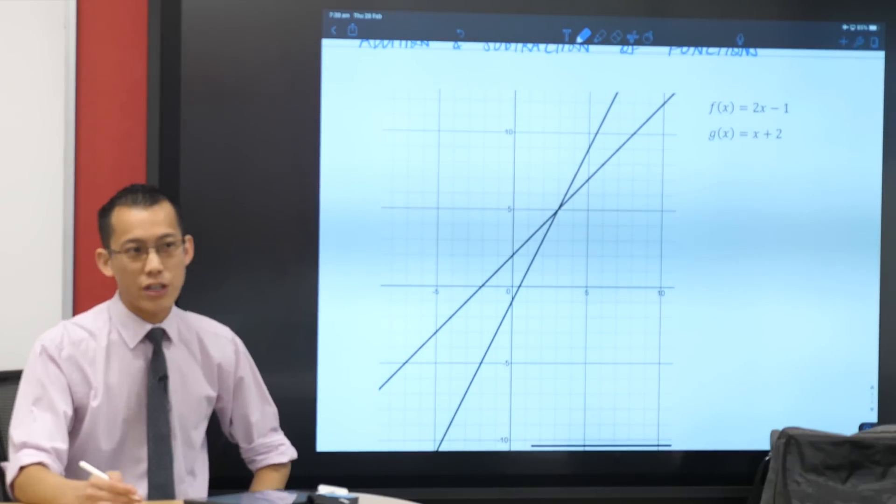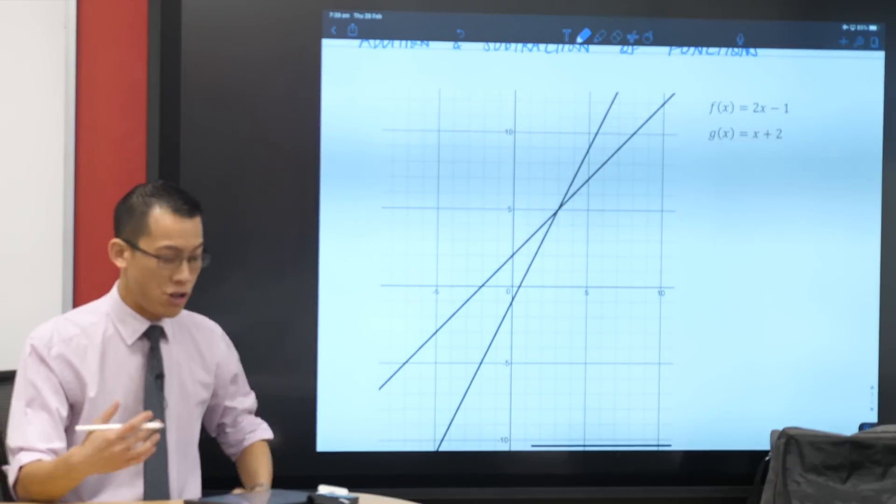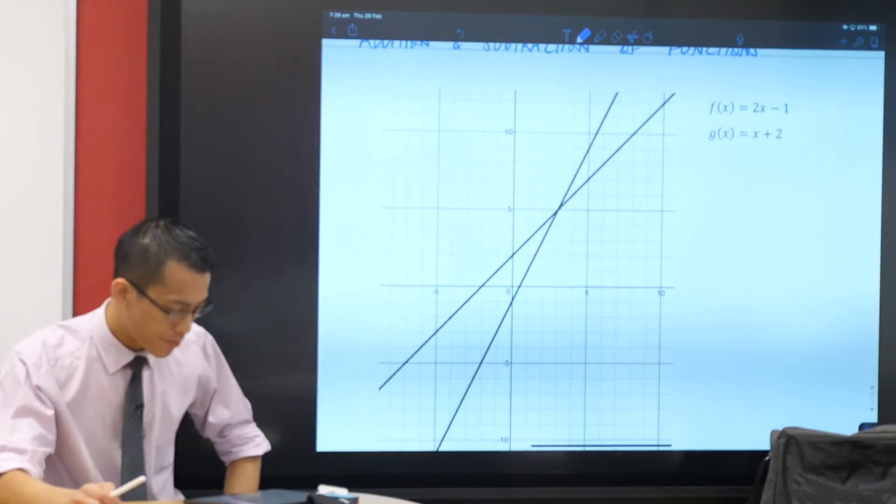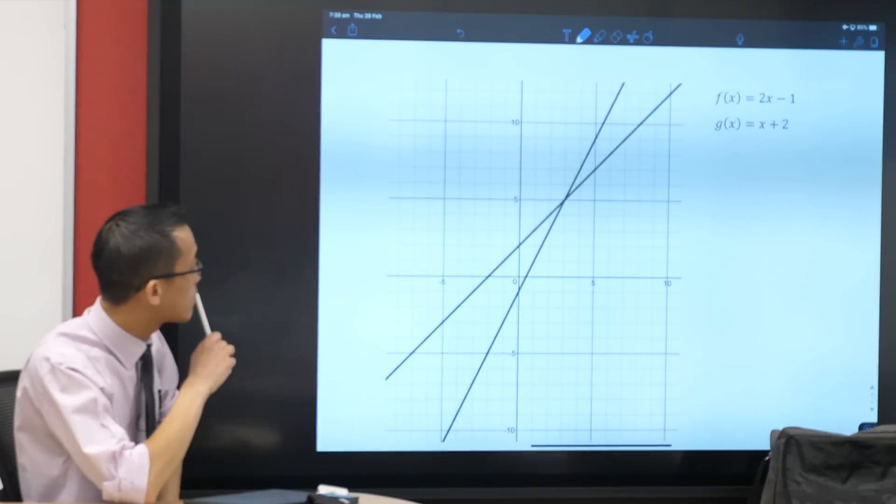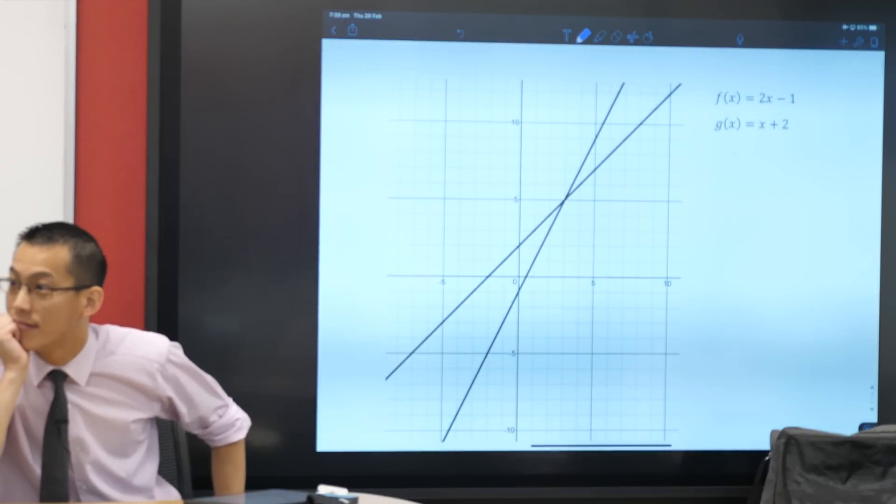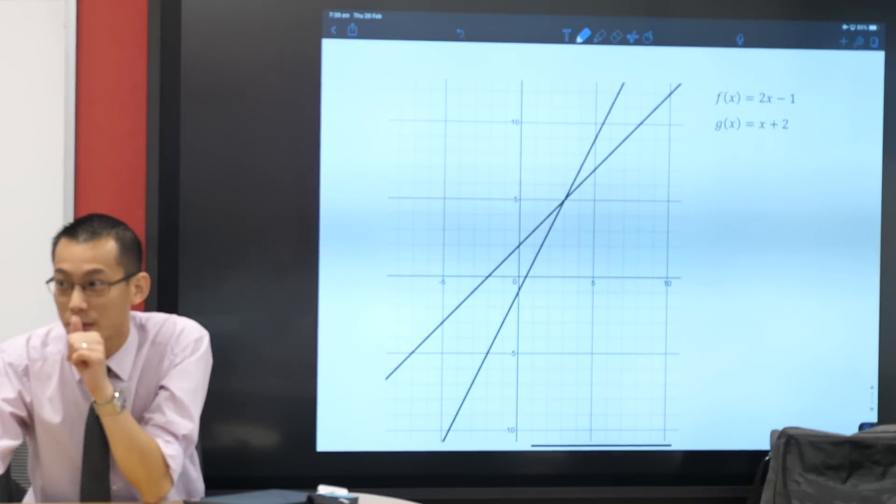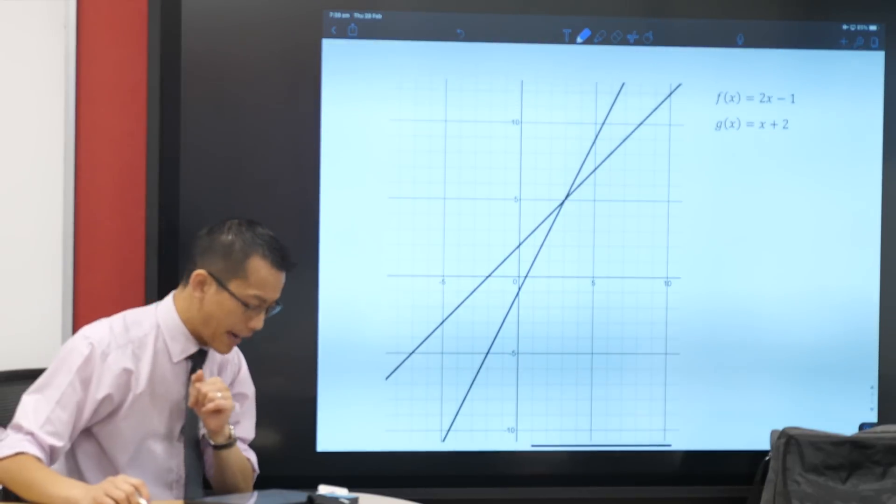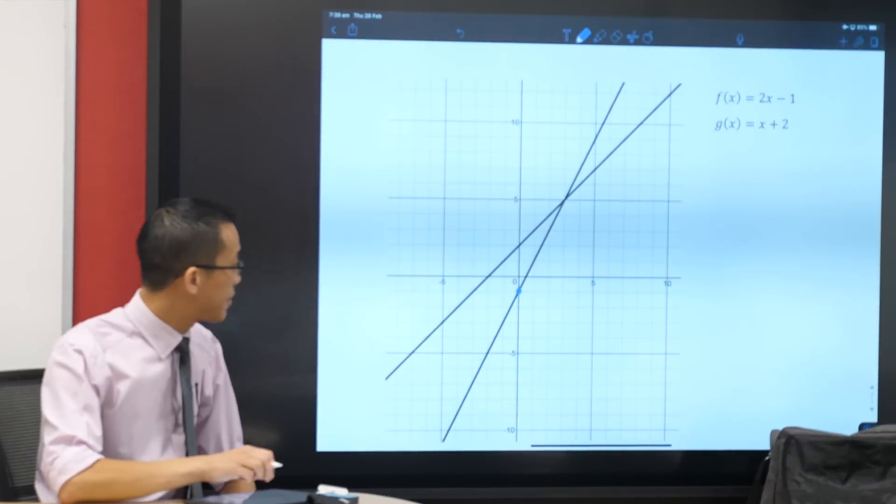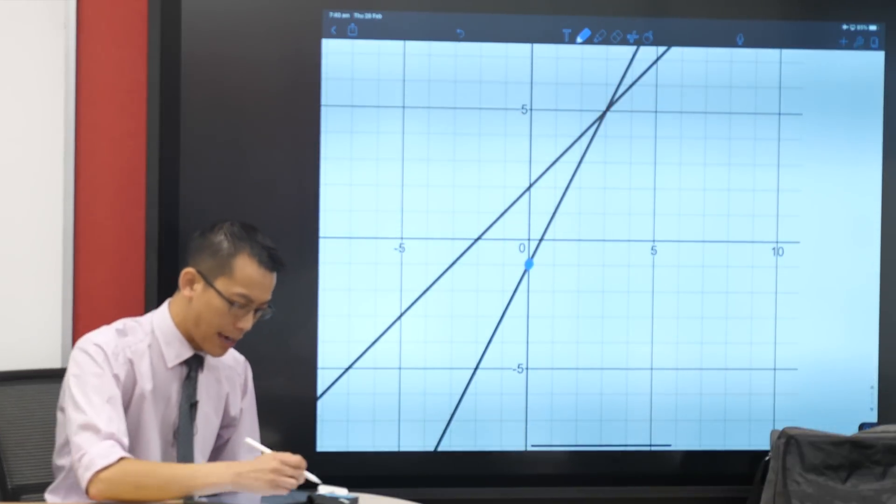My first question to you is, which of these is which? Which one is the f of x? And how can you tell? 2x minus 1 because it's minus 1 in the y-axis. So the y-axis is here. You can see where negative 1 is on the y-axis. That's the y-intercept of y equals 2x minus 1.